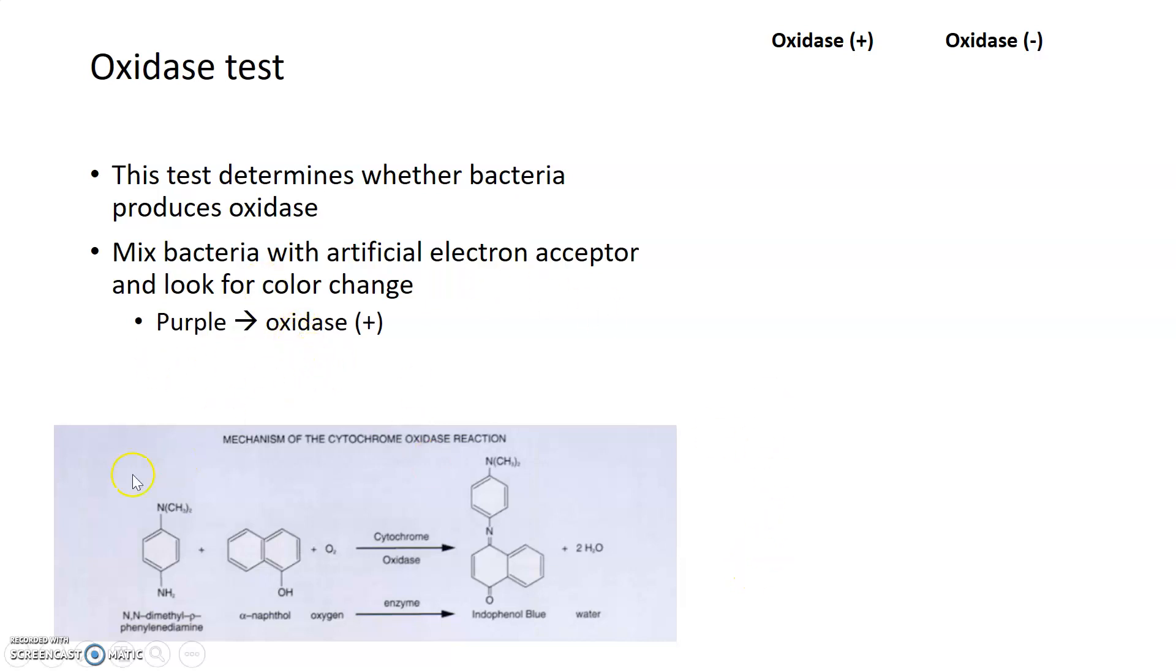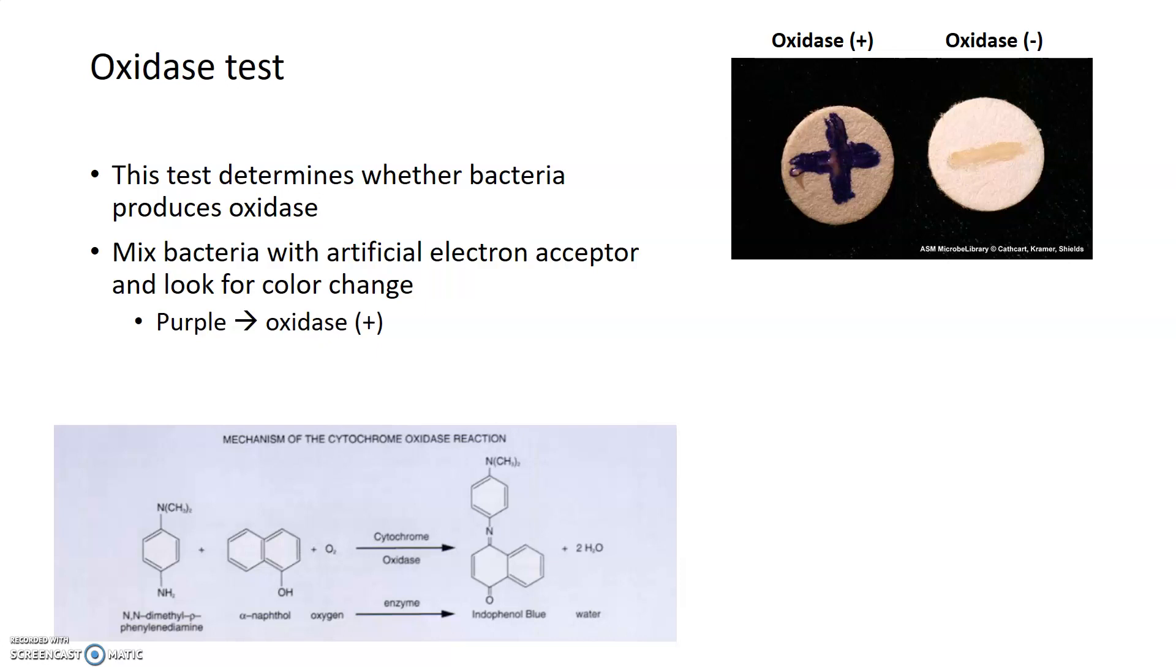The way that it does that is by using what's known as an artificial electron acceptor and looking for a color change. What the oxidase can do is turn this artificial electron acceptor, dimethyl p-phenylenediamine, from colorless to bluish purple. In the presence of oxidase, you'll see a purple color change, much like this up here. These filter paper discs have been impregnated with this artificial electron acceptor. Then the bacteria has been swiped onto the top of the filter paper using a cotton swab. You can see that there's a dark purple color change on the filter paper on the left and no color change in the one on the right. We would consider this purple to be oxidase positive and this no color change to be oxidase negative because the oxidase positive bacterium has the enzyme it needs to convert the artificial electron acceptor from colorless to purple in this reaction down here.